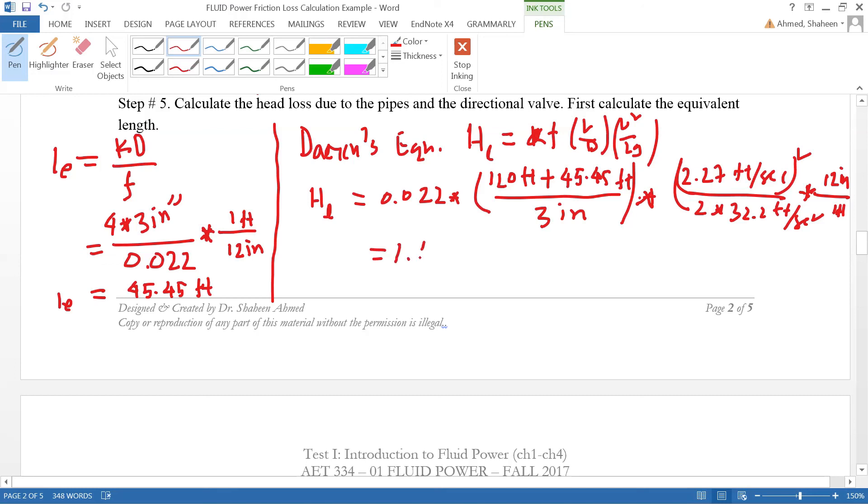about 1.165 feet of water. We are pumping water, so that's in terms of water head. That's the loss in the 120 feet pipe and the directional valve.